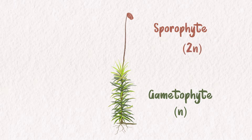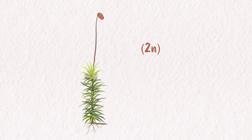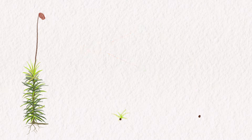This phase is diploid, meaning it has two sets of chromosomes. The sporophyte undergoes meiosis to create haploid cells, meaning they have just one set of chromosomes. These haploid cells, or gametes, are released as spores.